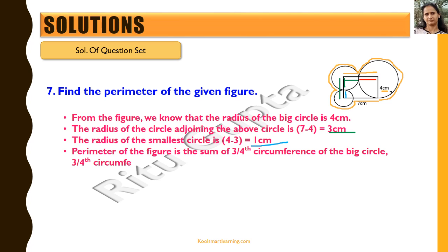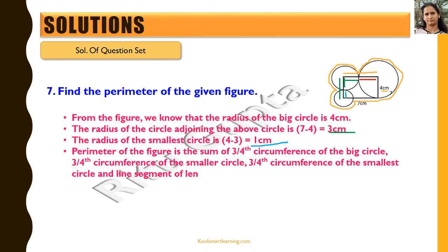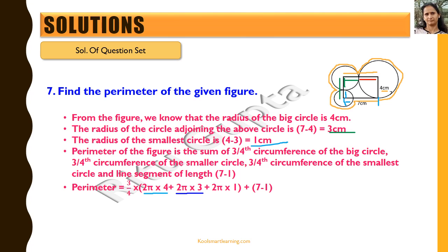The perimeter consists of three-quarters of the circumference of each circle plus the line segment of length 7 − 1 = 6 cm. Three-quarters of the circumference of the first circle is (3/4) × 2π × 4, the second is (3/4) × 2π × 3, and the third is (3/4) × 2π × 1. Adding the circumferences: 8π + 6π + 2π = 16π, and three-quarters of 16π is 12π. Adding the line segment gives 12π + 6 as the perimeter.